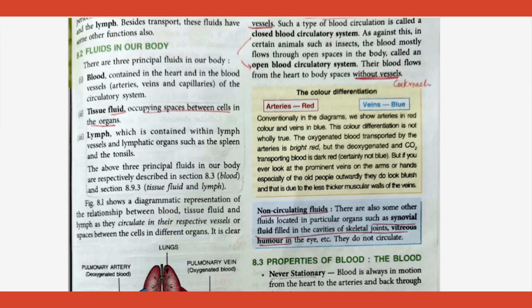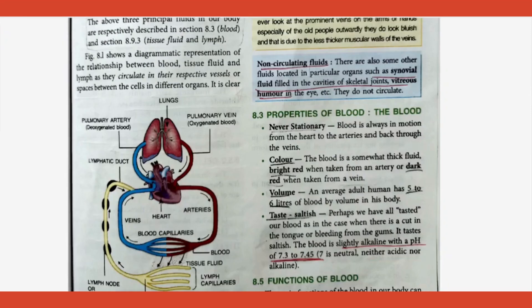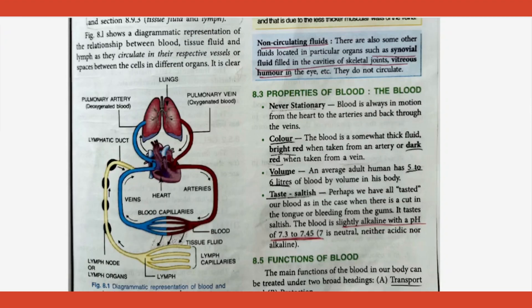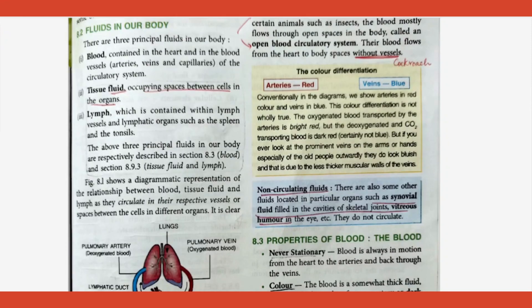Blood is the liquid contained in the heart and blood vessels. Let's understand tissue fluid: as blood passes from artery to arterioles to capillaries, the diameter of the blood vessel keeps decreasing. Because volume is decreasing, pressure increases, and because of this increased pressure, some part of the blood oozes out of the capillary — and that is called tissue fluid.